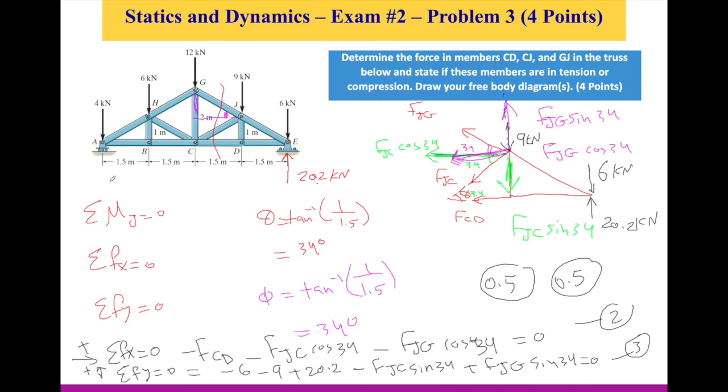And if you were able to do the substitution and find at least two of the three variables, which are FCD, FJC, and FJG, you'll get another half a point. And this will add up to 4 out of 4. I want you to do the analysis on your own because it's substitution.